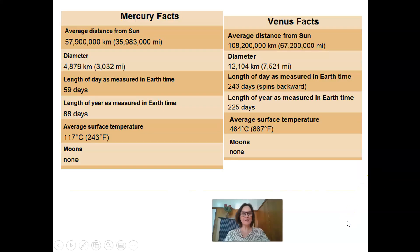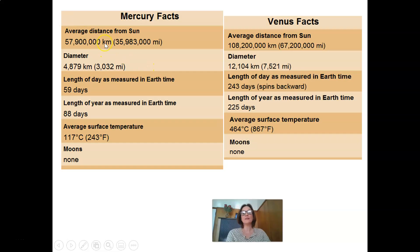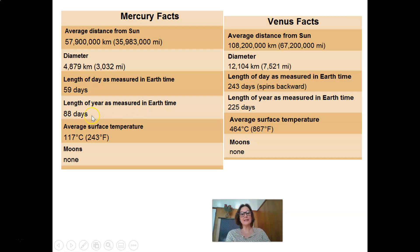Let's take a look at the difference between Mercury and Venus using the fact sheets. Just take note of things that interest you — the distance from the Sun, the diameter, the length of the day. On Mercury, a day is 59 Earth days, whereas on Venus it is 243 days. Remember, Venus spins backwards. The length of the year: Mercury is 88 days, whereas Venus is 225 days.